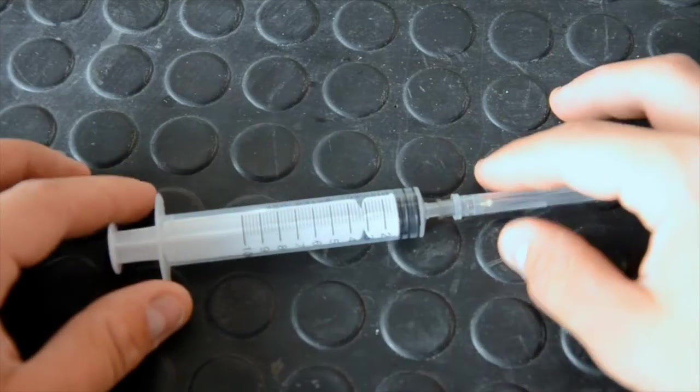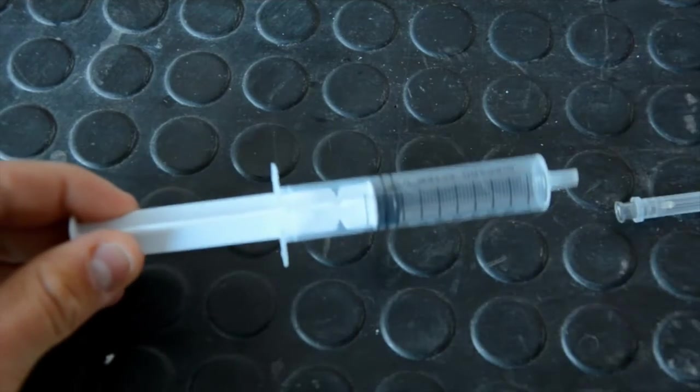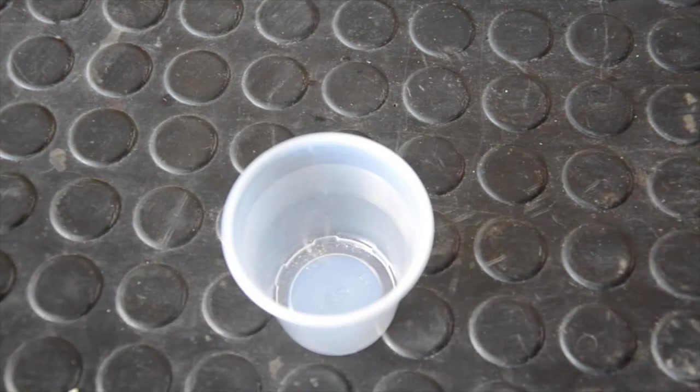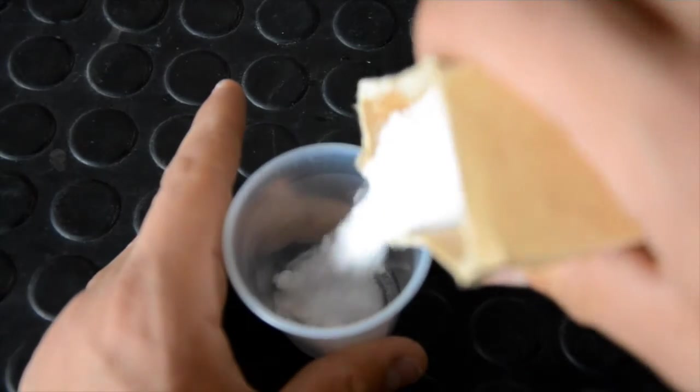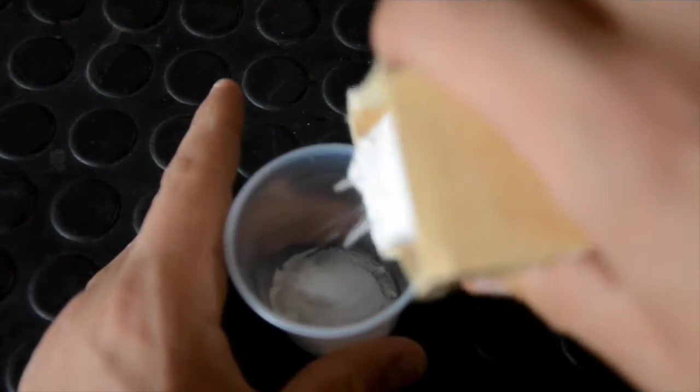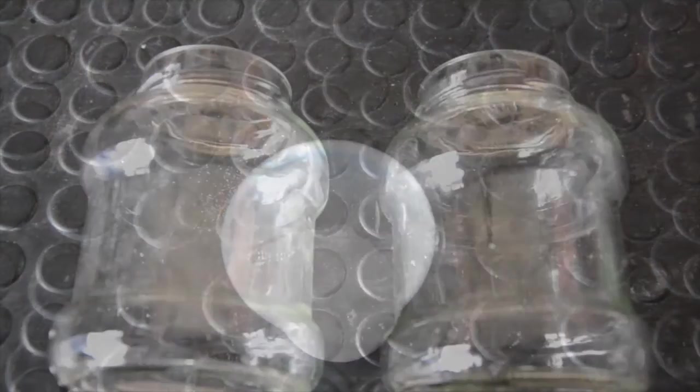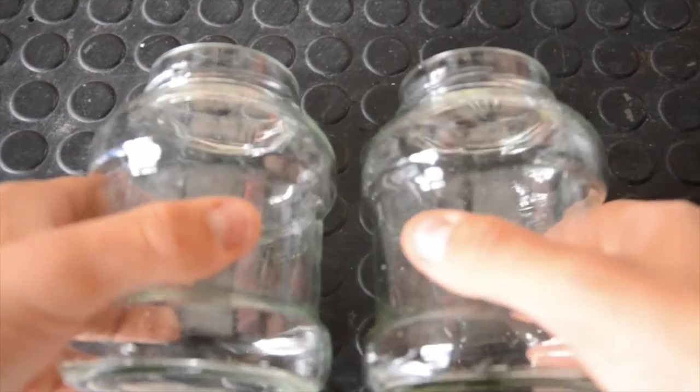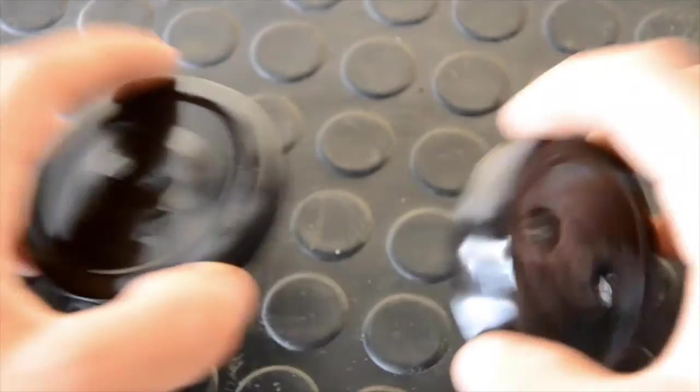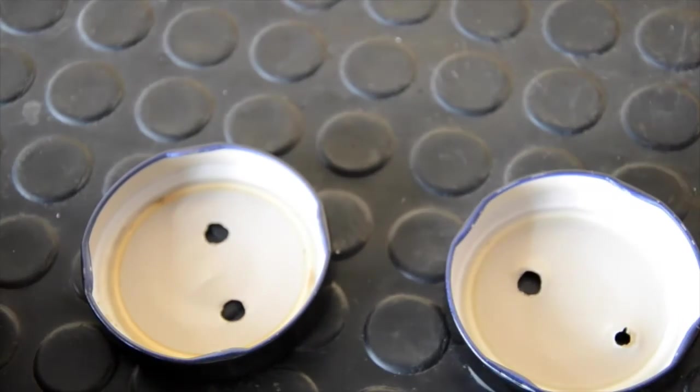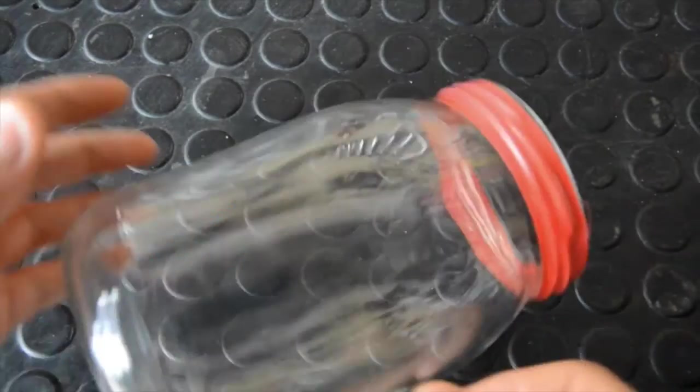The apparatus was composed of a syringe without the needle, a spoon of soda, two glass containers, two hollowed stoppers, and one collective tank.